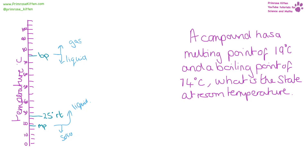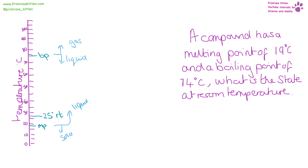The other important thing to remember about boiling point and melting point is that the opposite is the same number. So boiling point equals condensing point, and melting point equals freezing point. If the boiling point is 74, the condensing point is 74. If the melting point is 19, the freezing point is 19.